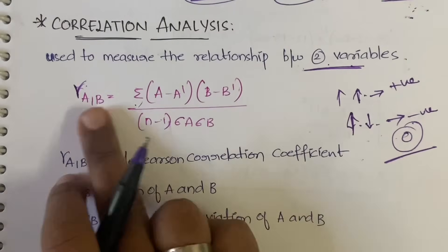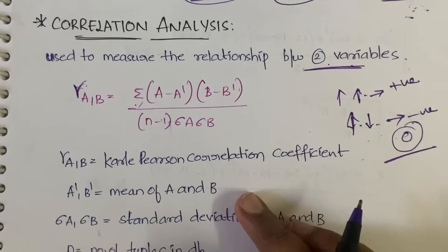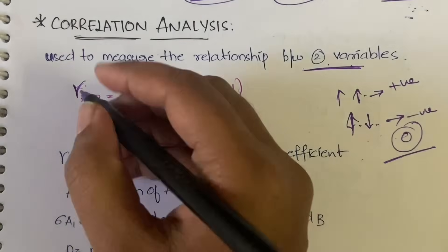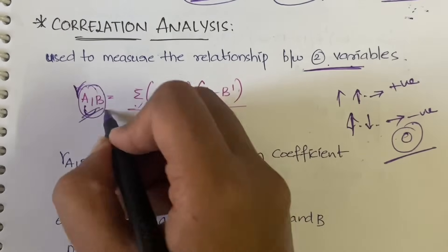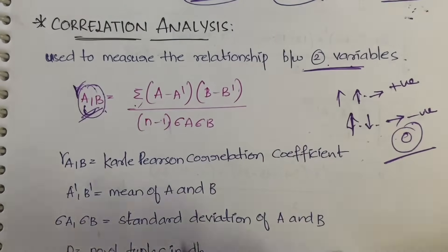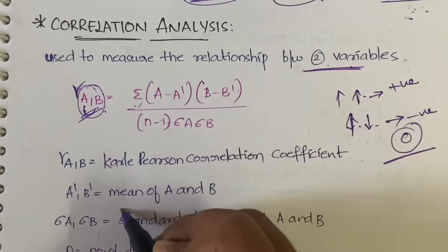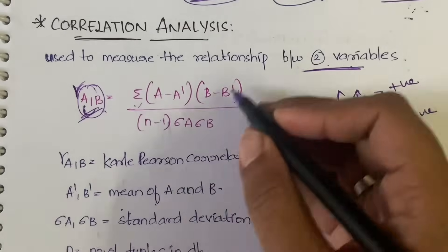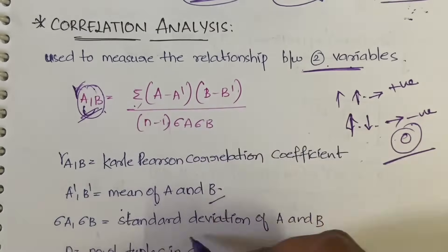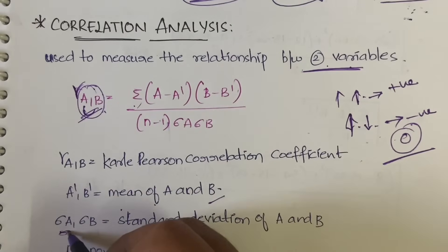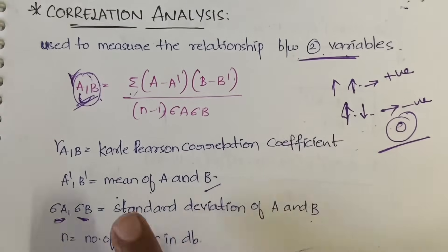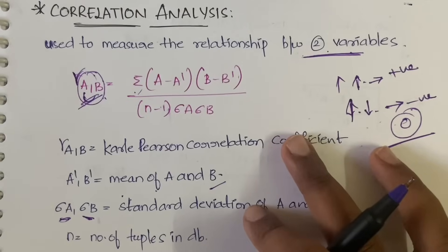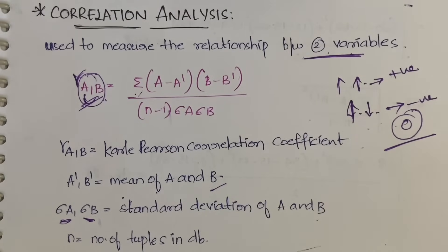Gamma of A comma B is Karl Pearson's correlation coefficient, which tells you the relationship between A and B. A-bar and B-bar are the means of A and B respectively. Sigma-A is the standard deviation of A, sigma-B is the standard deviation of B, and n is the number of tuples — that is, the number of rows in the database.